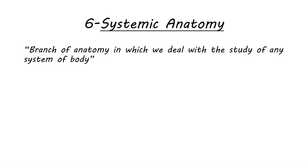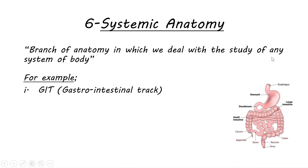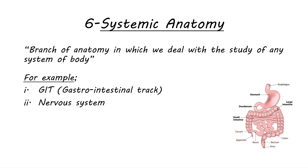Systemic anatomy is based on our body systems. For example, we can study our GIT system — starting from our oral cavity, then the stomach, then the large intestine. All of these together form our GIT system, which we study in systemic anatomy.